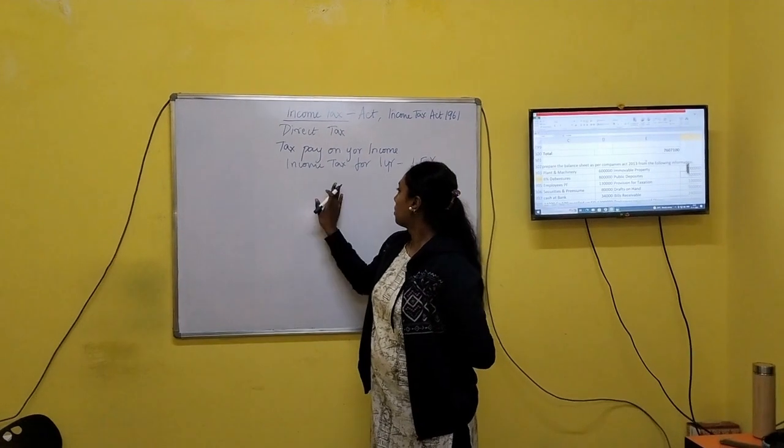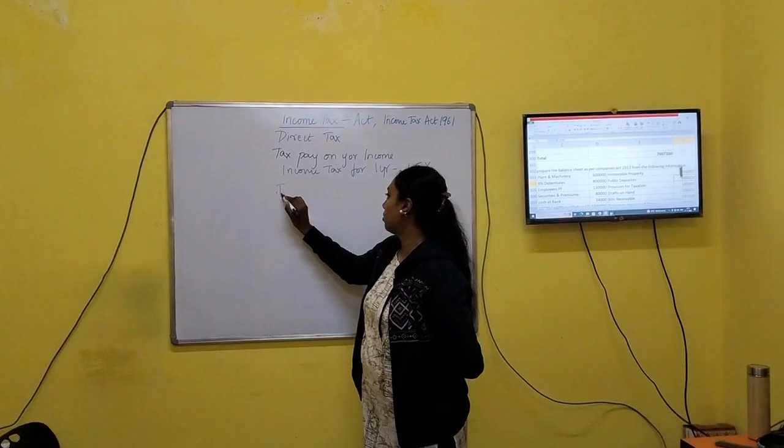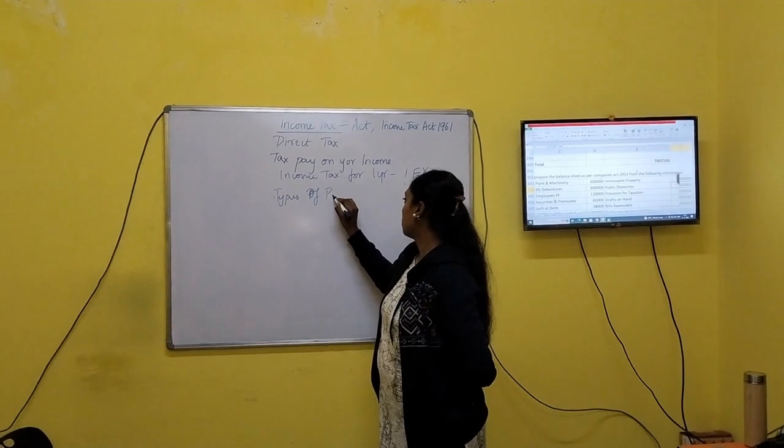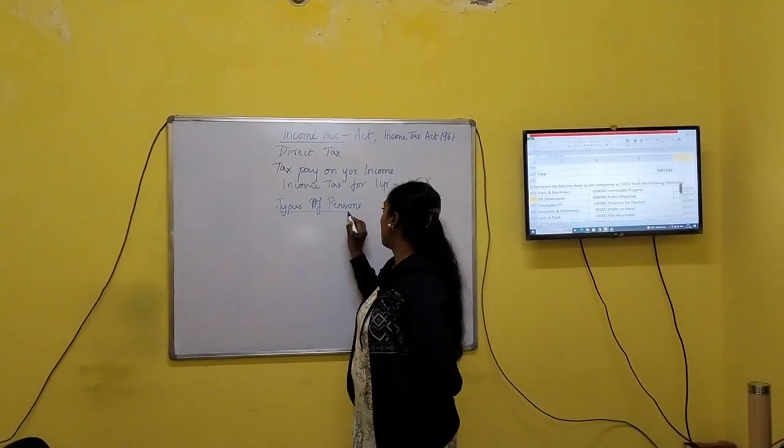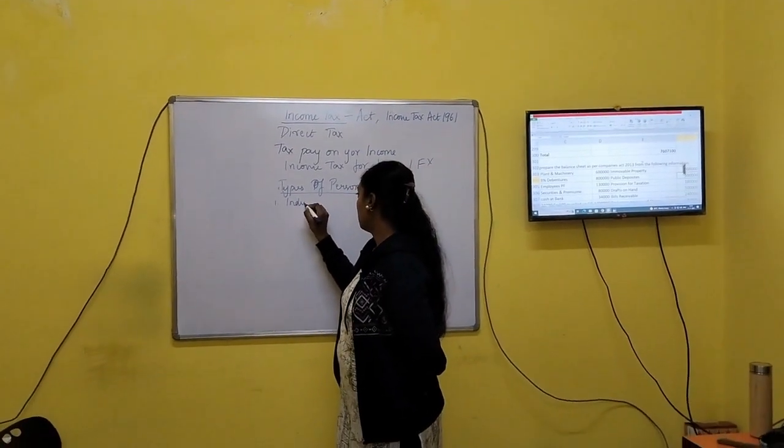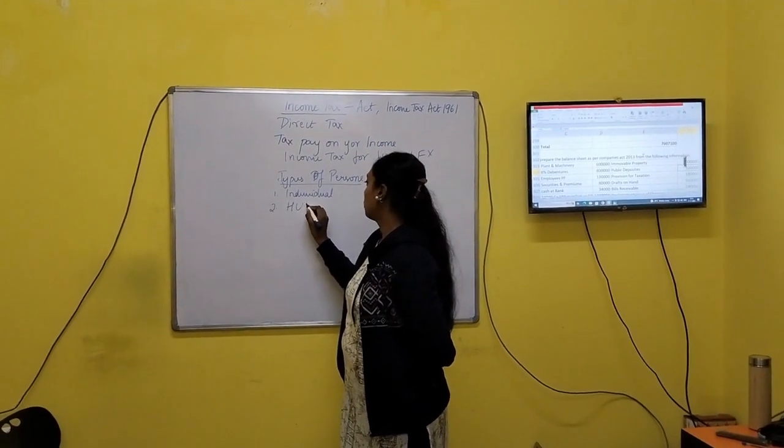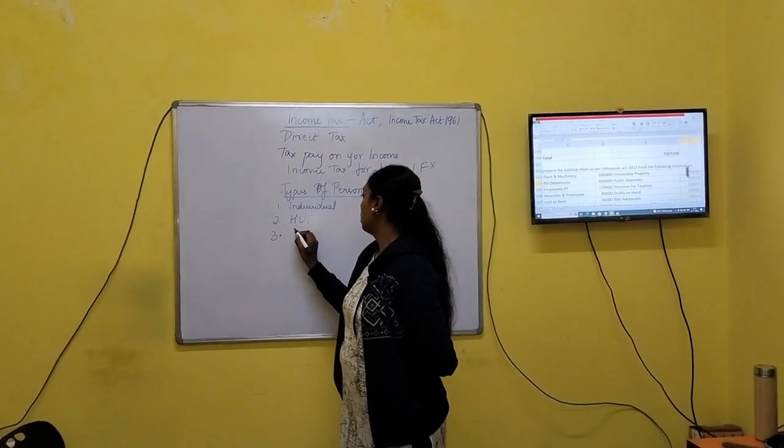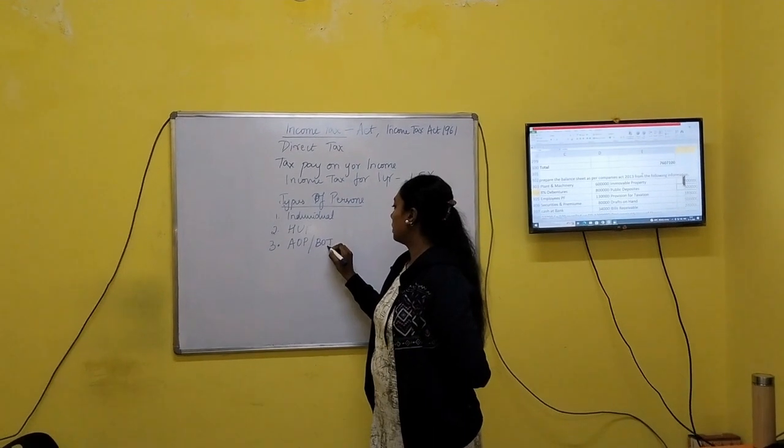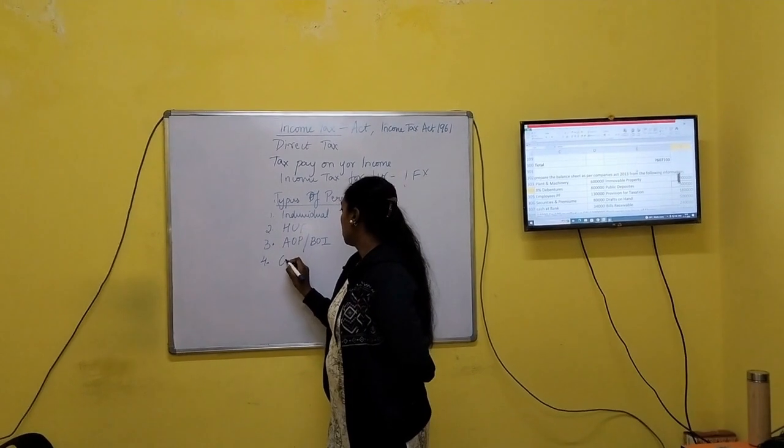For income tax, they have given different types of persons. According to income tax, there are types of persons. First one: individual. Second: HUF. Third: AOP means Association of Persons and Body of Individuals. Fourth one: companies.